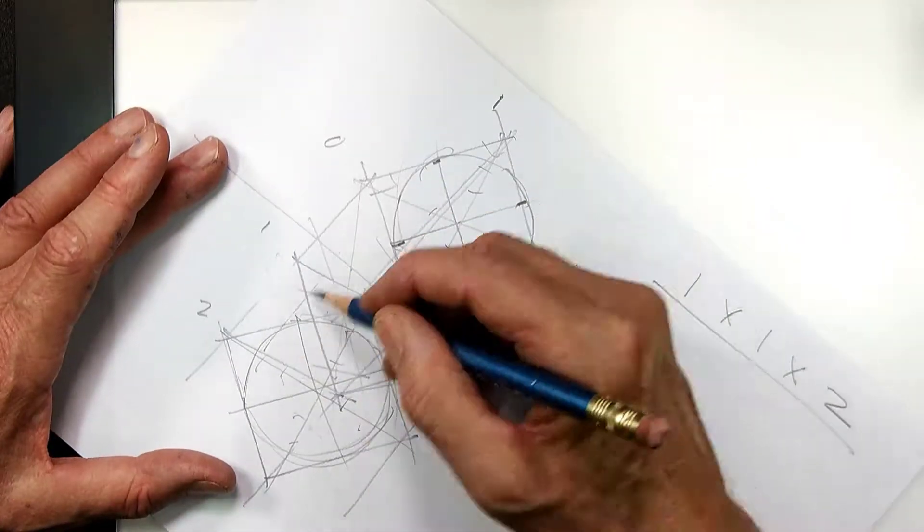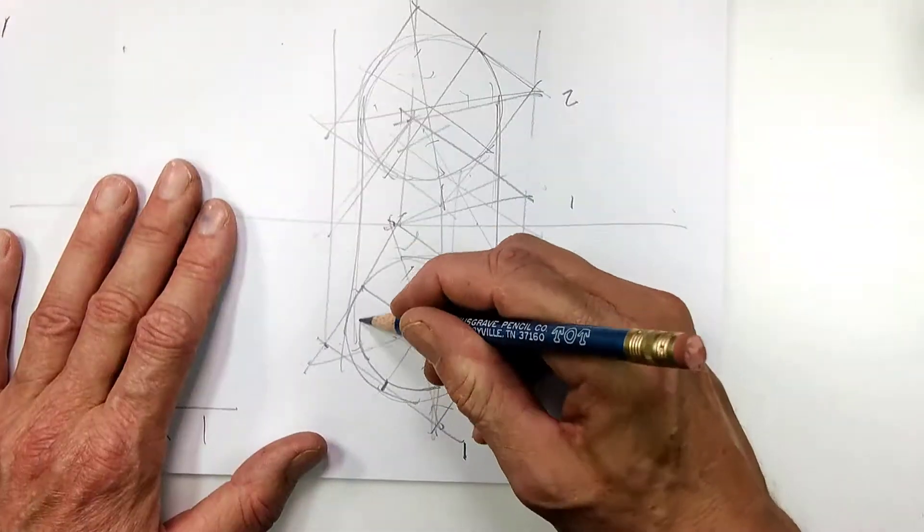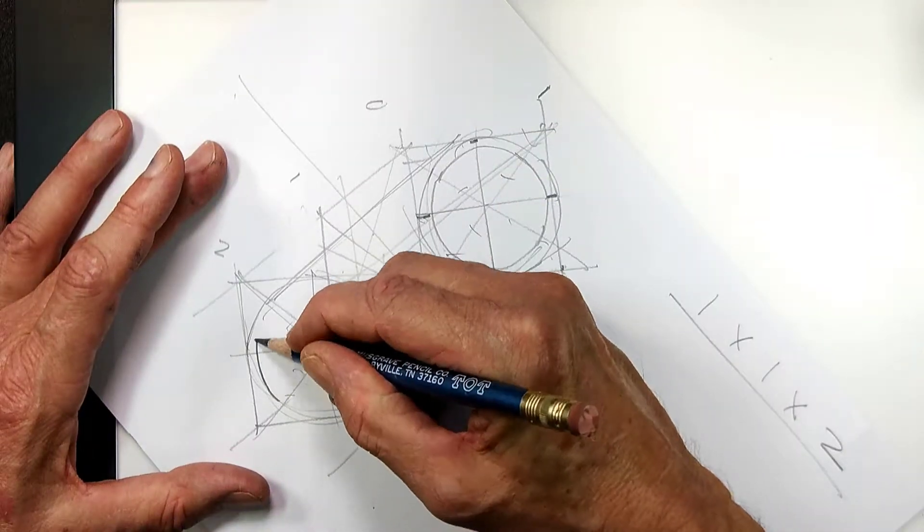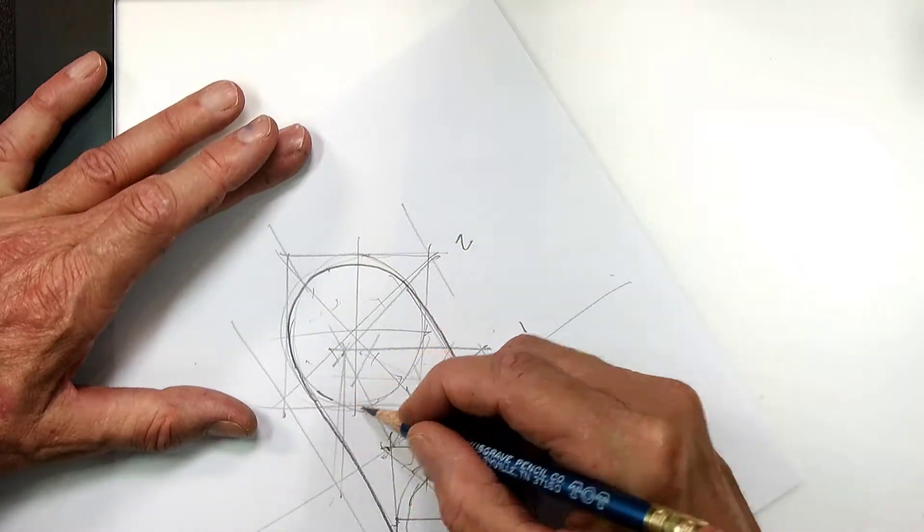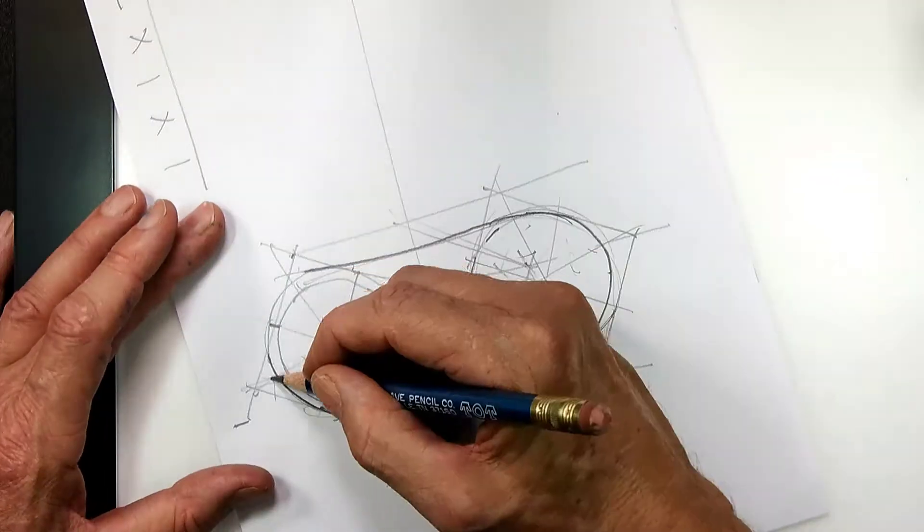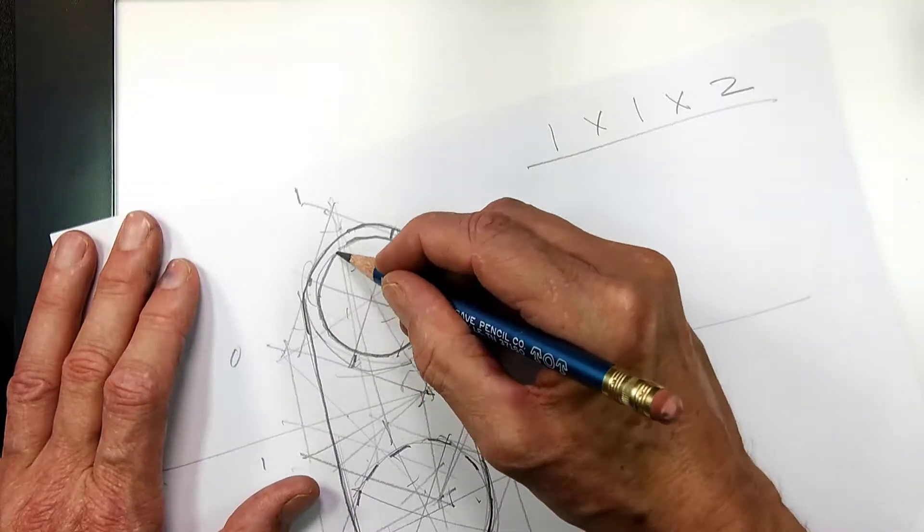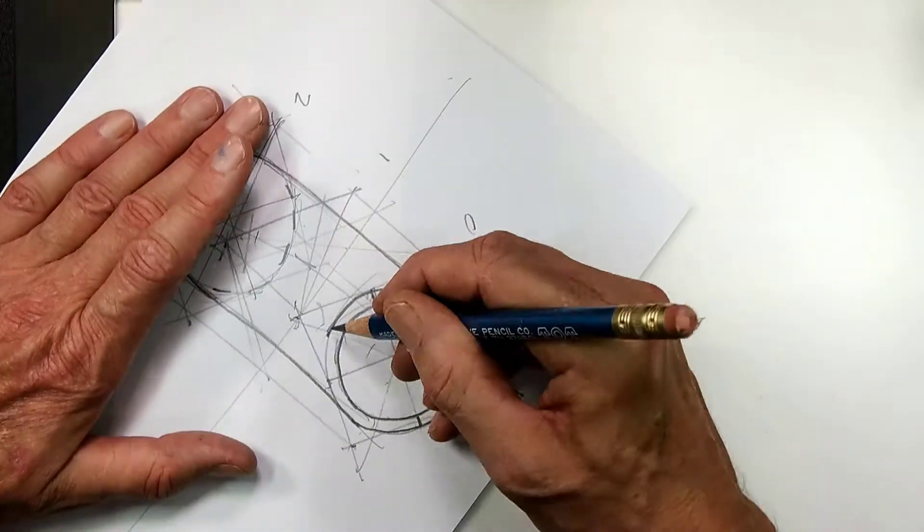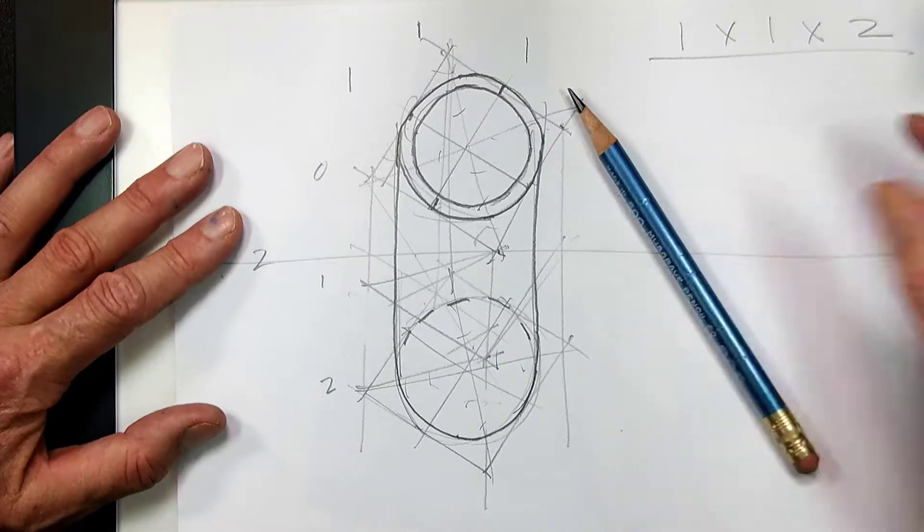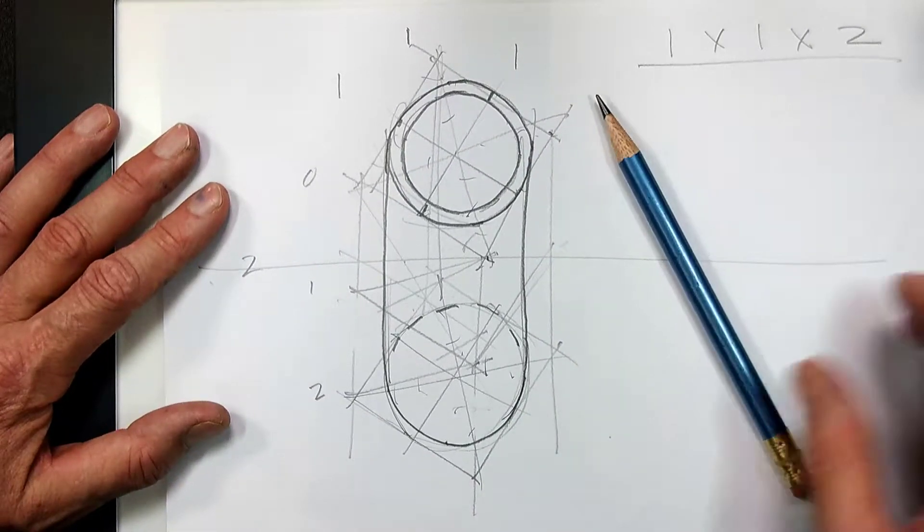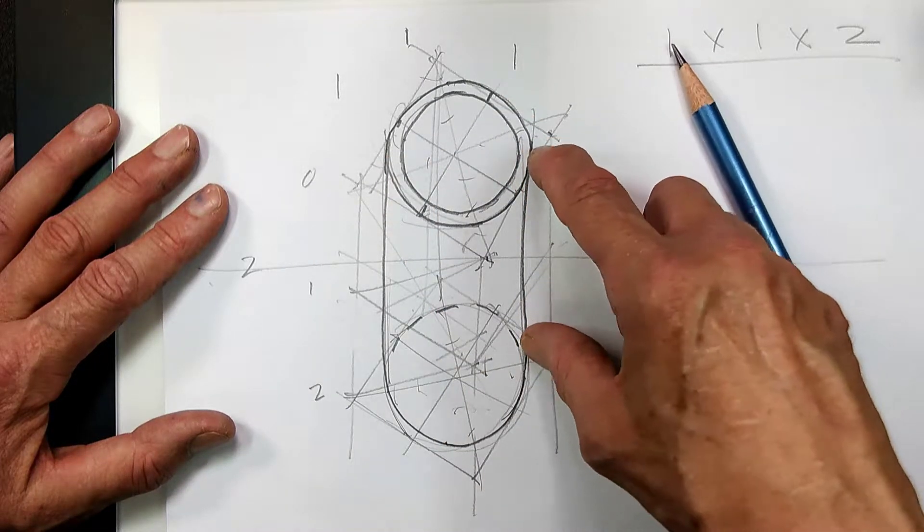So let's draw a tube. Okay, that is a drawing, a top plan oblique of a cylinder that has diameter 1 and 2 units deep.